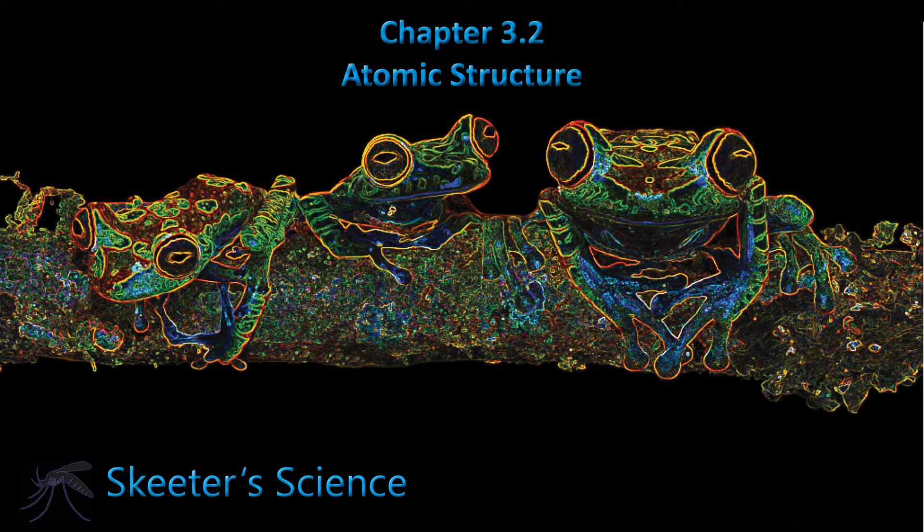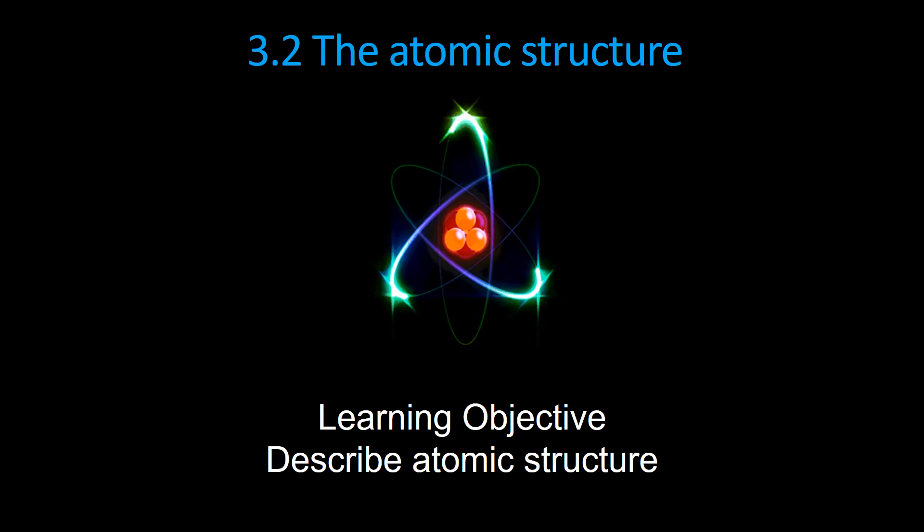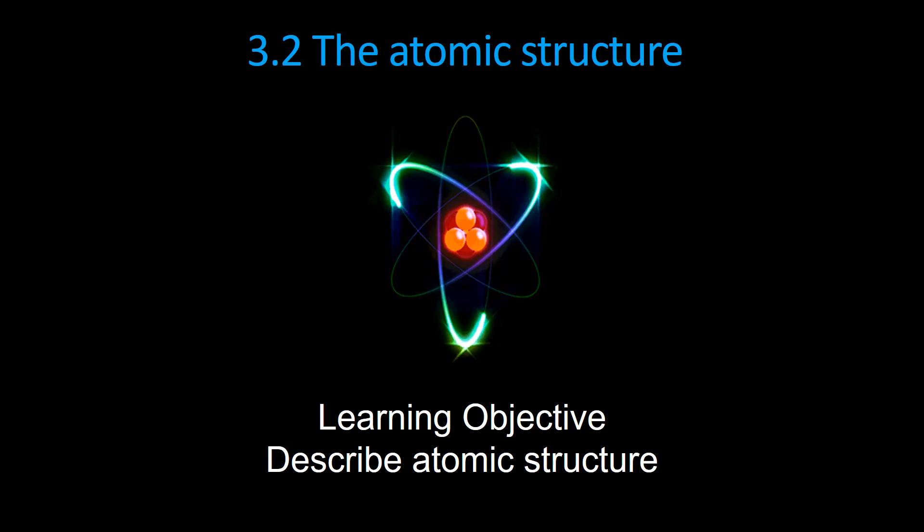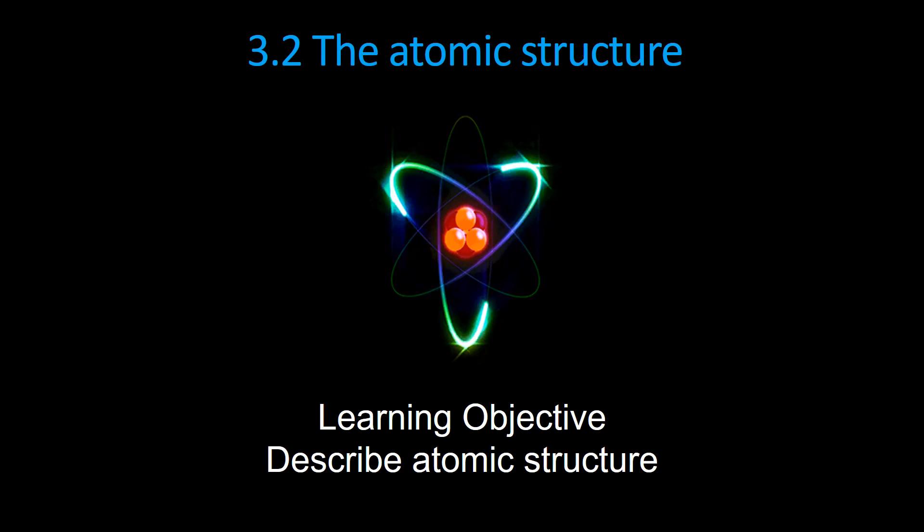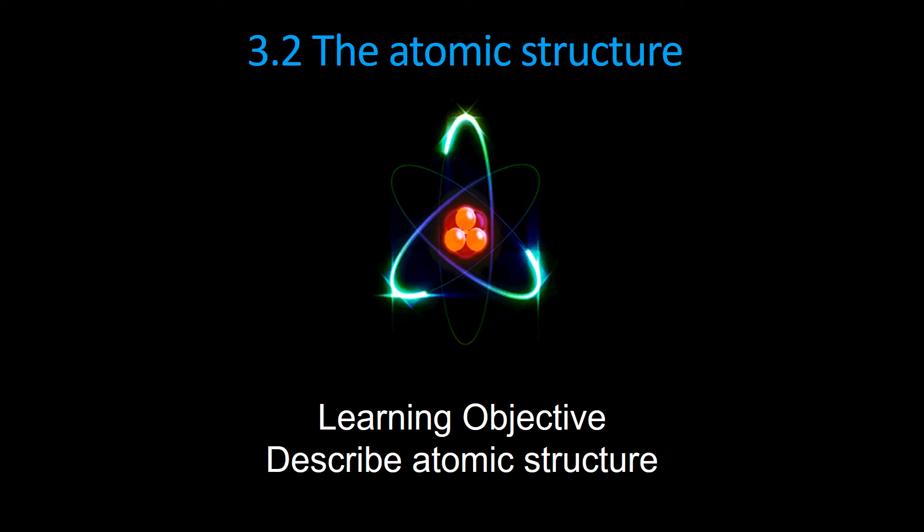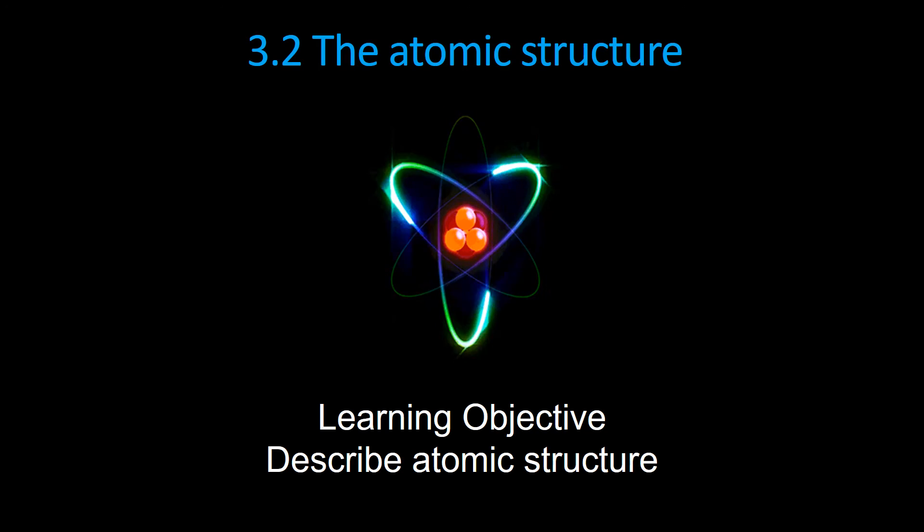Chapter 3, Section 2. This is about atomic structure. In the previous section, we learned where the elements came from. They came from astronomical processes of nuclear fusion and supernova explosions. Now we want to be able to describe our atomic structure.